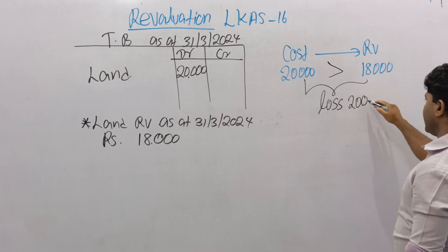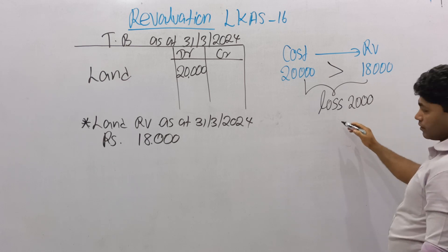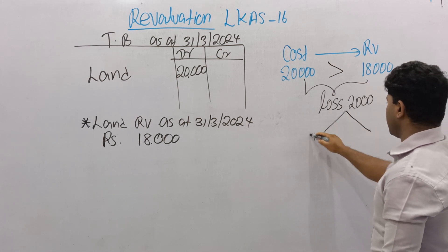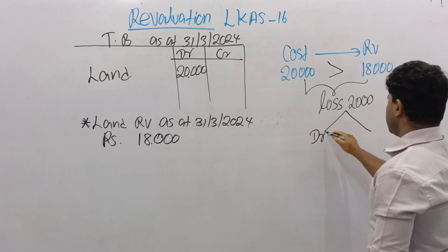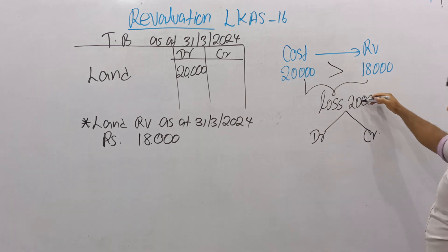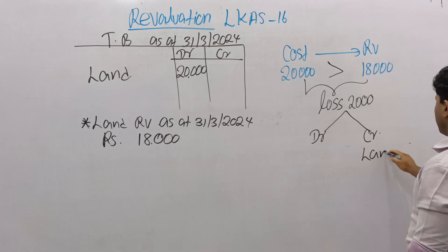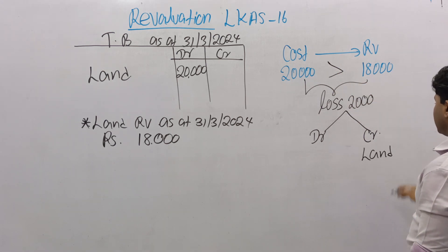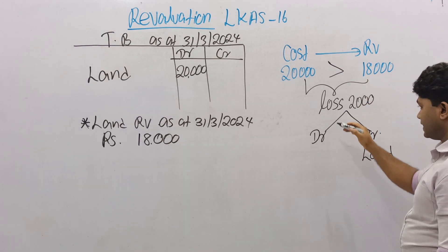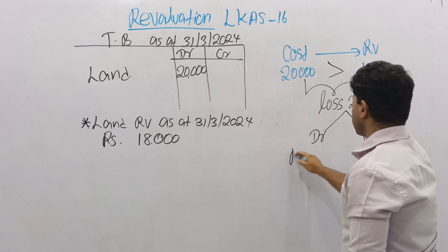If there is a loss, you have to know how to record in the ledger accounts as a result of the revaluation loss. Think about the double entry: which account is debited and which is credited? Since the land value decreases, it is an asset decrease — therefore land account is credited. And since revaluation loss is an expense, the revaluation loss account is debited.